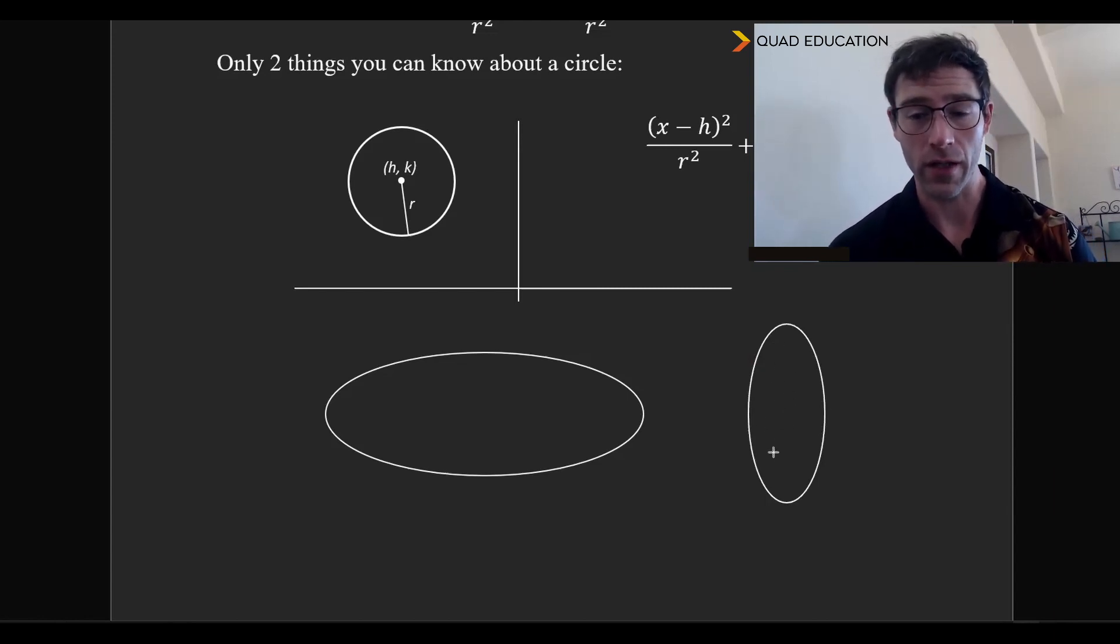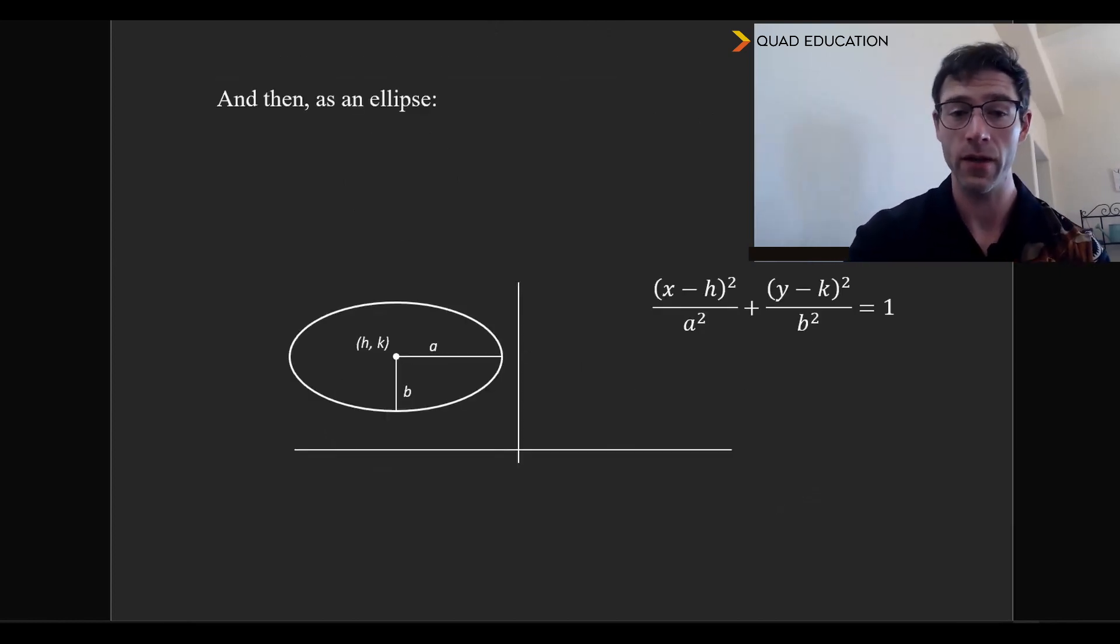Just in the second one here, the y-axis is the major axis, because it's longer along the y than it is along the x. So when I say ellipse, I'm just talking about a squished circle.